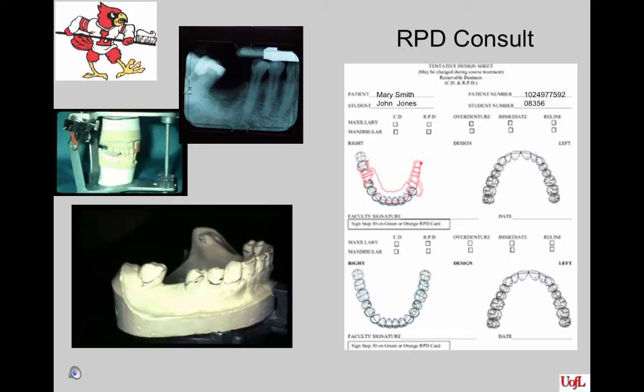The next thing you want to do is bring your patient, radiographs, mounted case, and surveyed casts with a tentative design sheet that has your attempted design for a removable partial denture. We will do an RPD consult — we'll look at the patient, look at the cast and all the information, and decide on a tentative design for an upper and/or lower RPD. We will also decide which teeth constitute good abutments for an RPD and which teeth need either new restorations such as a crown or just fillings. We also get you started and hopefully finished on a treatment plan so that you can get moving with the treatment.